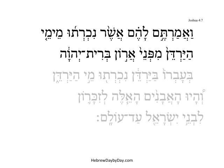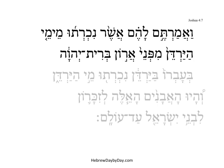Joshua 4:7a. We're in the middle of a speech act of Joshua where he is explaining how to answer when the younger generation asks, 'What are these stones for?' And you will say to them that the waters of the Jordan, they were cut off from before the Ark of the Covenant of the Lord.